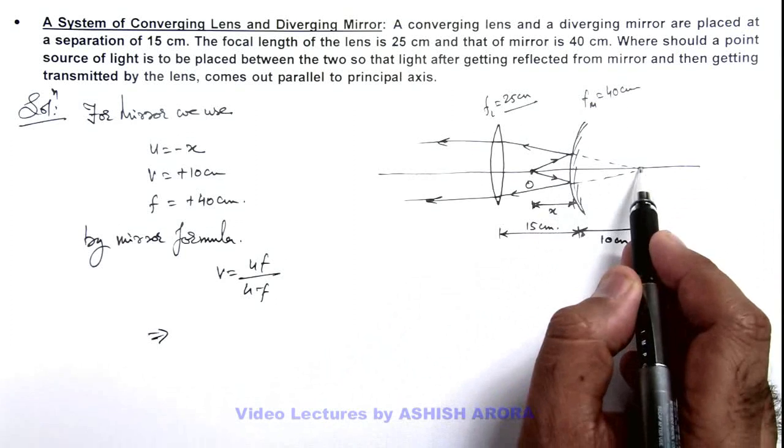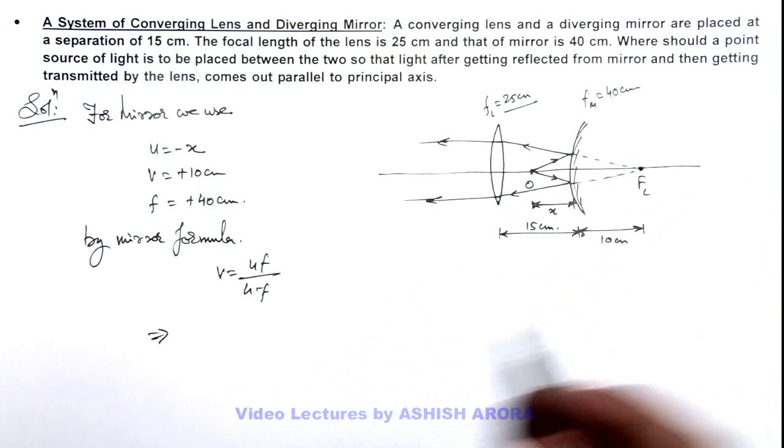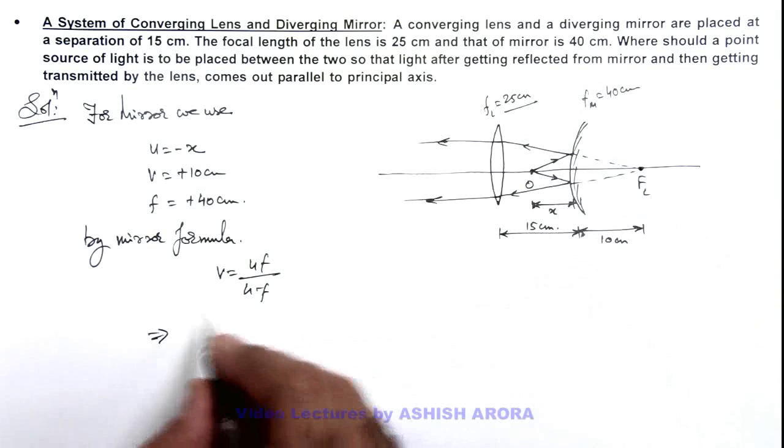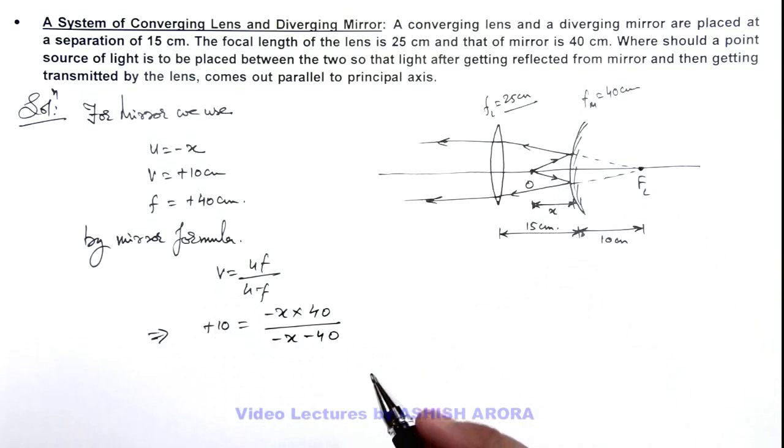For this mirror the image is to be produced at a point which is the focal length of this lens. So here v should be plus 10. This is minus x multiplied by 40 divided by minus x minus 40. So here this 10 gets cancelled out.